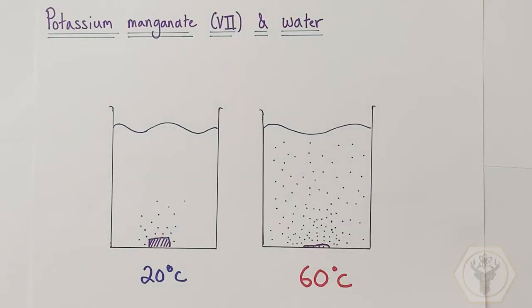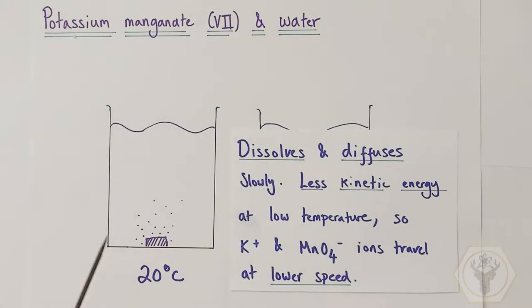Our first experimental example is the dissolving of purple crystals of potassium manganate(VII) in either cold or warm water and the effect that has on the rate of diffusion. In the cold water environment, the purple crystal dissolves more slowly and the speed and rate of diffusion also appears to be much slower.